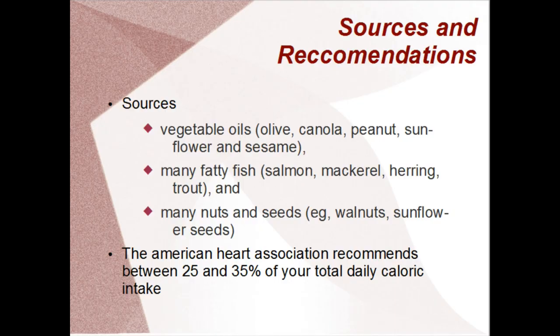Sources of mono and polyunsaturated fats include vegetable oils such as olive, canola, peanut, sunflower, and sesame; many types of fish, especially fatty fish such as salmon, mackerel, herring, and trout; and many nuts and seeds such as walnuts, sunflower seeds, and almonds.